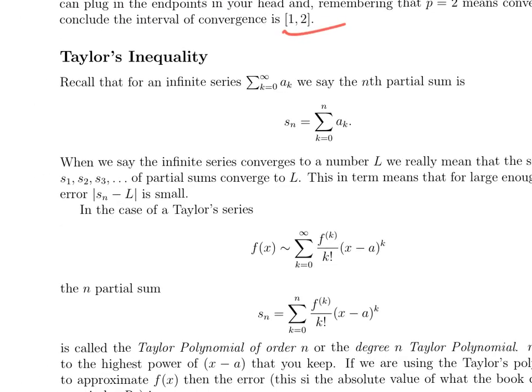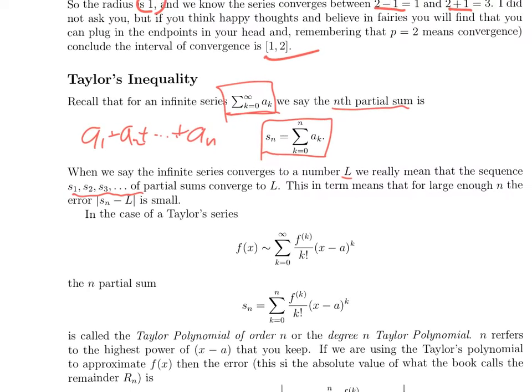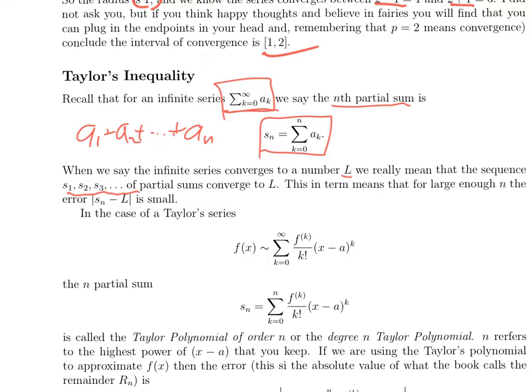So I want to remind you that if you have any old infinite series, sum k equals 0 to infinity of a_k, we say the nth partial sum is the sum from k equals 0 to n. So that's a finite sum. That's just a₁ plus a₂ plus ... plus aₙ, whatever aₙ is. It's a finite sum that is part of the infinite sum, throwing away everything after the aₙ. And when we say that this infinite series converges to a number L, what we really mean is that the sequence of partial sums converges to L, which really means that when n is very large, the error between the approximation sₙ and the limit L is small.